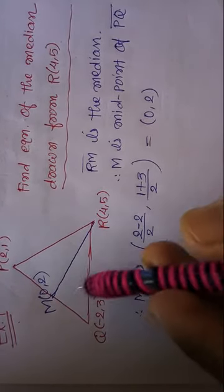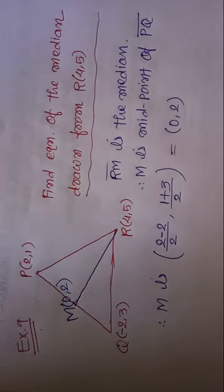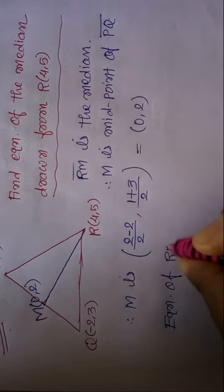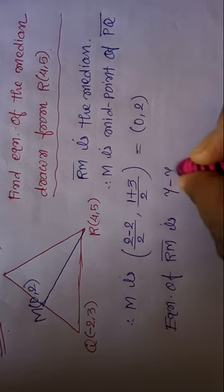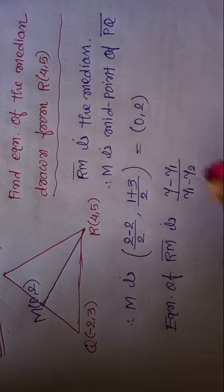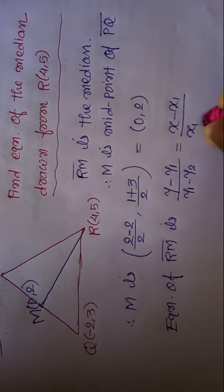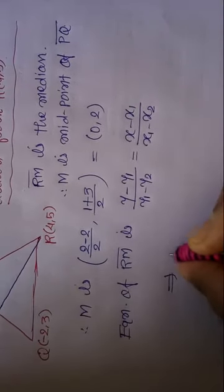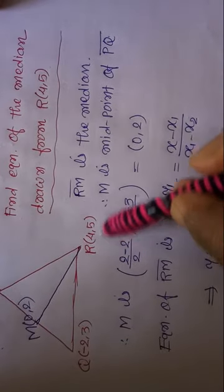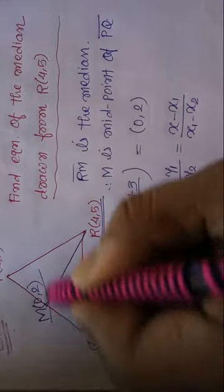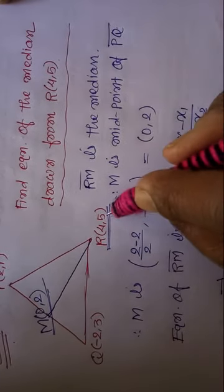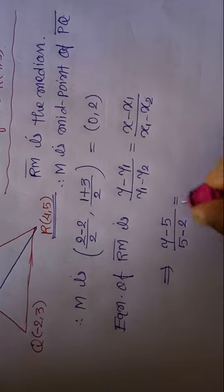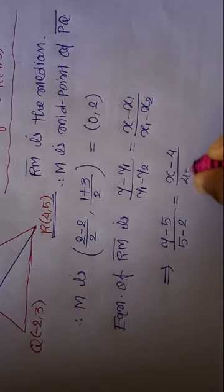Now it is very easy to find the equation of line segment RM because we now have 2 points. We use the two-point form to find the equation of line RM. The formula is: (y - y1)/(y1 - y2) = (x - x1)/(x1 - x2). Point R is (4,5) which is (x1, y1), and M is (0,2) which is (x2, y2). So y minus 5 upon 5 minus 2 equals x minus x1 upon x1 minus x2.